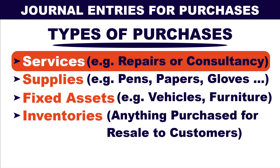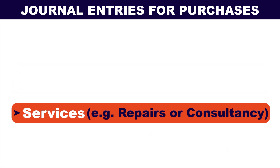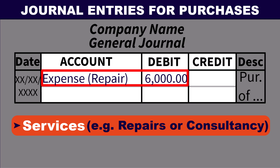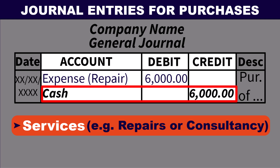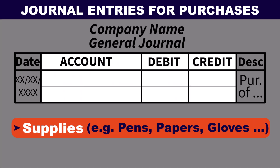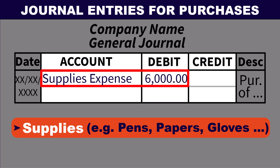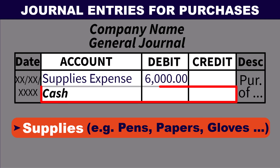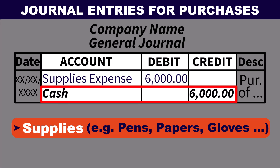Let's first see purchase of services — for example, repair of an equipment. The journal entry looks like this: debit expense, which is repair expense, and credit cash if it is a cash purchase, or credit accounts payable if it is a credit purchase. Next, purchase of supplies. The journal entry for purchase of supplies will be debit supplies expense and credit cash if purchased in cash, or credit accounts payable if purchased on credit.